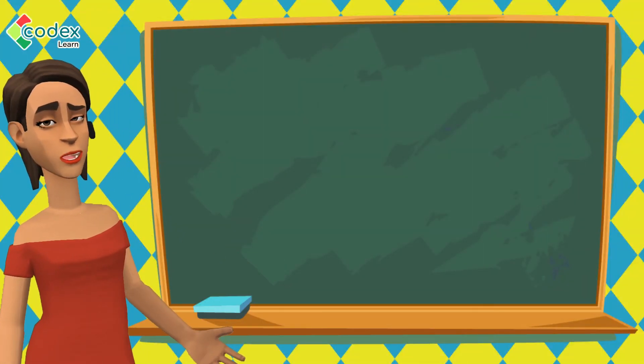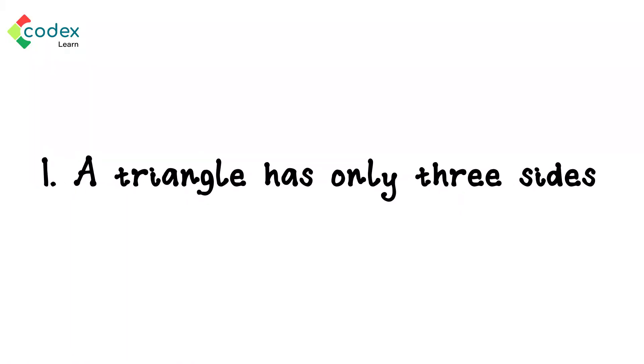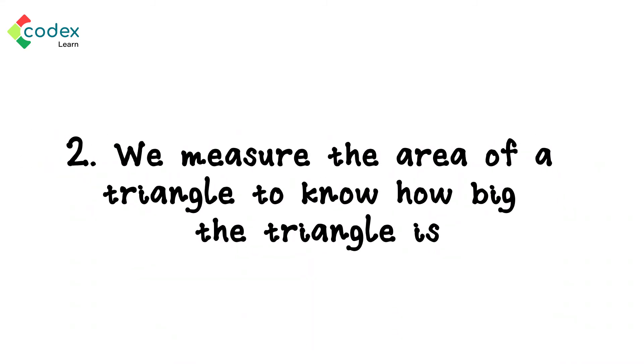Now, let us go back to the beginning with a few simple points. Number one, a triangle has only three sides. Number two, we measure the area of a triangle to know how big the triangle is.